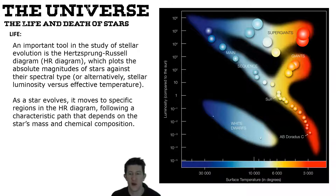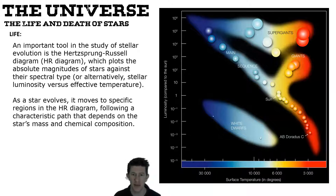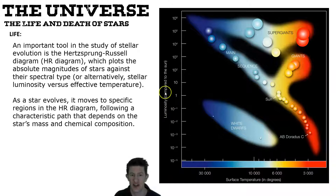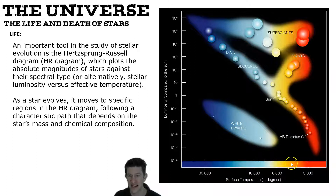The next step is to look at the typical sequence of how a star lives and dies. There's a famous diagram called the Hertzsprung-Russell diagram — or HR diagram — named after two people, Hertzsprung and Russell. It plots the absolute magnitude against spectral type, or alternatively luminosity versus temperature. One on the luminosity axis represents roughly how bright our sun is.